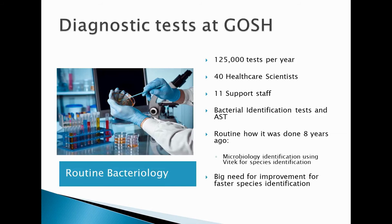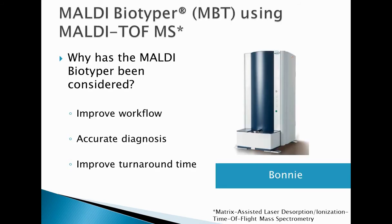In the microbiology department we have bacterial identification tests and antibiotic susceptibility tests. Eight years ago, things were quite different. We used to do a lot of bacterial identification tests — routine tests such as a staph latex test, an oxidase test, a gram film — to get an identification of organisms. At the time, eight years ago, we had a Vitek which we used for species identification. But generally, we used mainly actual identification tests. However, hospital capacity is increasing and we needed to meet demand, with a need for faster species identification.